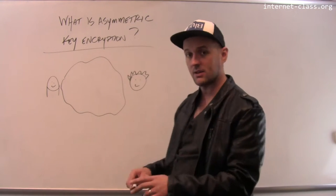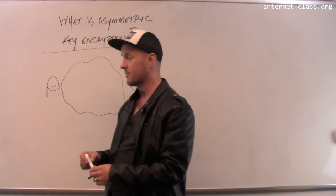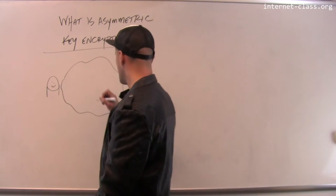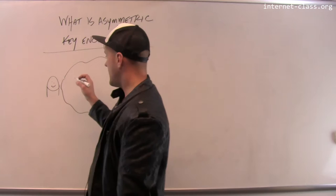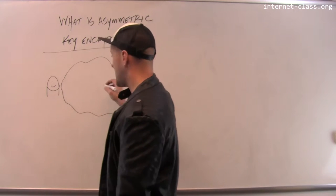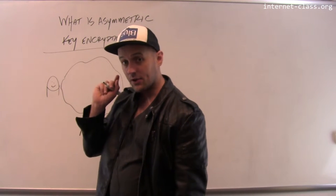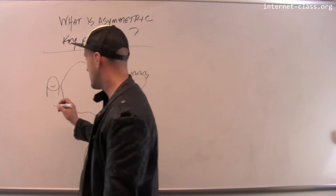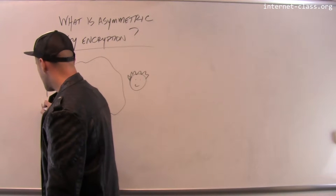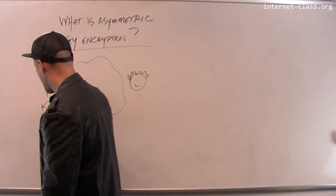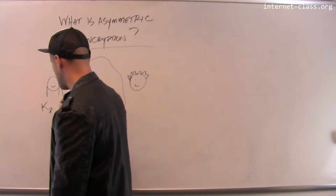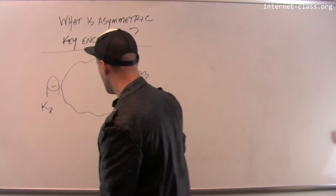Let's walk through an example of how this would work. Alice and Bob now have two keys each instead of one. There's going to be something called the private key.